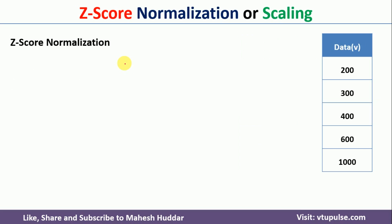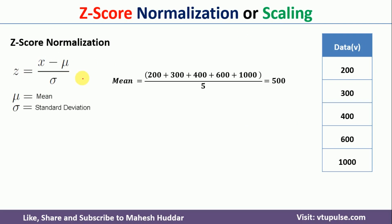Coming to the next normalization technique, that is z-score normalization. In z-score normalization, we use the equation z = (x - μ) / δ, where μ is the mean and δ is the standard deviation. First, we need to calculate the mean. The mean is equal to the sum of all values divided by 5, which is equivalent to 500 in this case.